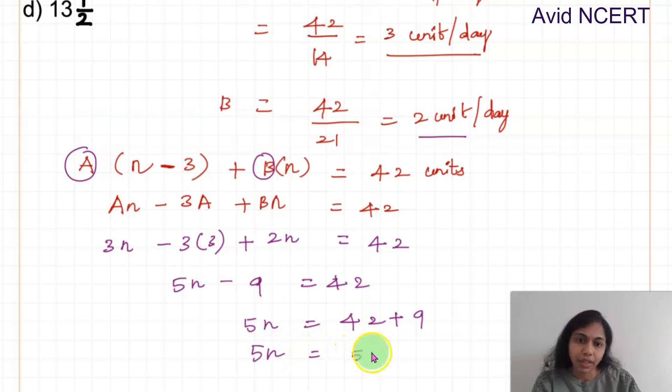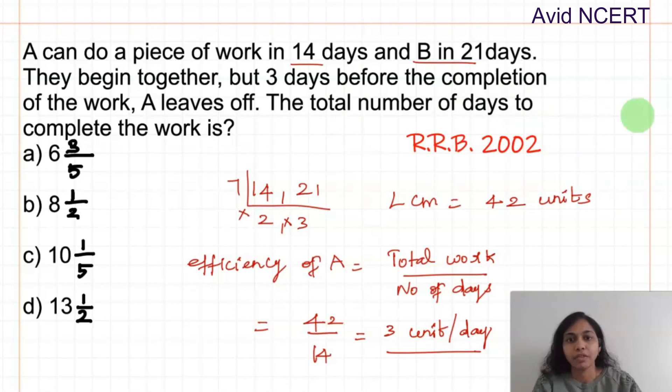So 5N equals 42 plus 9 which equals 51. Therefore N equals 51 divided by 5 which equals 10 and 1/5. Therefore the total number of days to complete the work is 10 and 1/5. If you have any doubts please let me know in the comments.